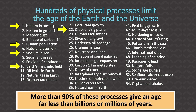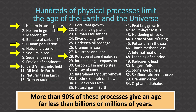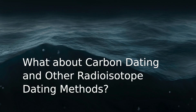We could also consider the oldest living plants. We have some very old trees — like Methuselah — dated in 1957 to be about 4,700 years old. Why don't we have trees that live much longer than that? That fits the biblical timescale but doesn't make sense in an evolutionary timescale. We could also look at the rotation of spiral galaxies — the spiral arms should not exist if these galaxies are billions of years old, as evolutionists say. There are many other examples refuting millions of years.